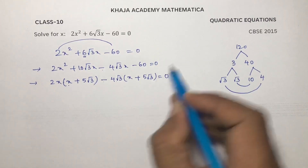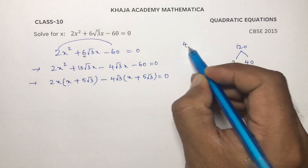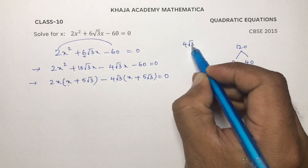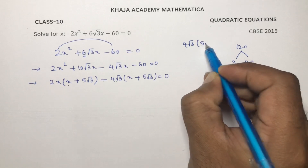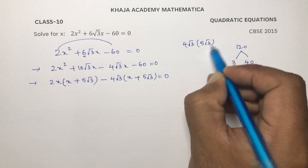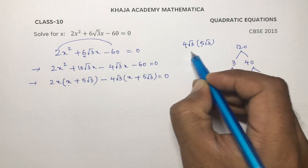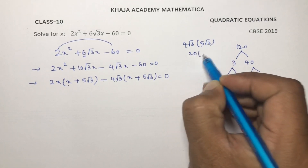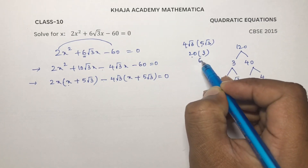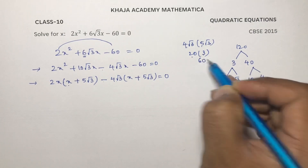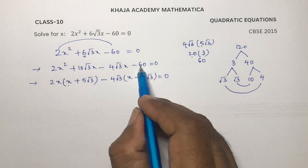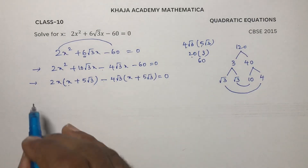If you want, you can multiply and check: 4 root 3 into 5 root 3 — 4 times 5 is 20, root 3 into root 3 is 3, 20 times 3 is 60. So you got 60, which confirms the factoring.